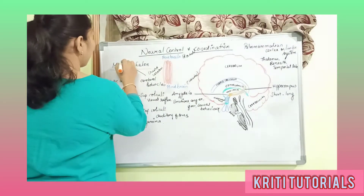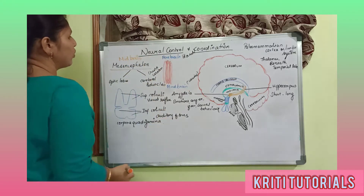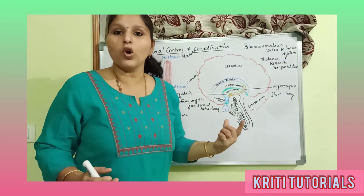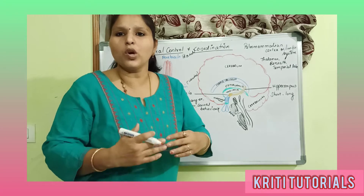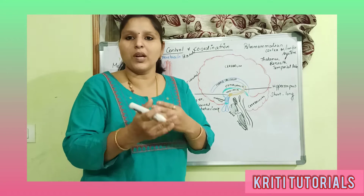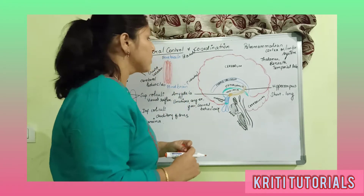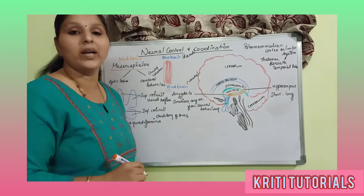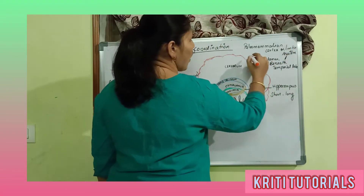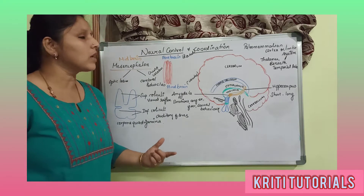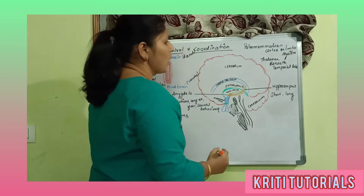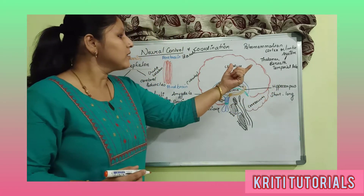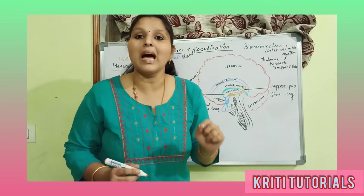Before entering into the midbrain, let us discuss a small part present in the forebrain. In the diencephalon of the forebrain there is a small system. That system is called the paleo mammalian cortex, or it is also called the limbic system. This limbic system is located in the thalamus part of the brain, just beneath the temporal lobe.